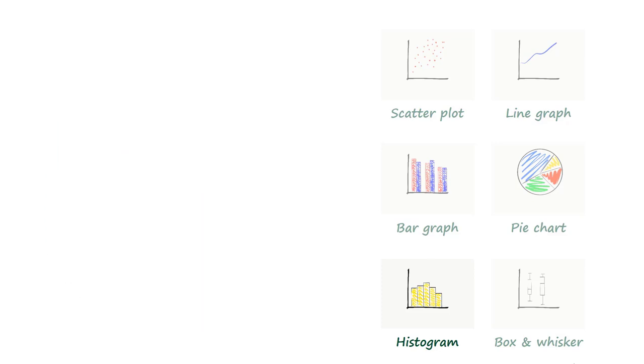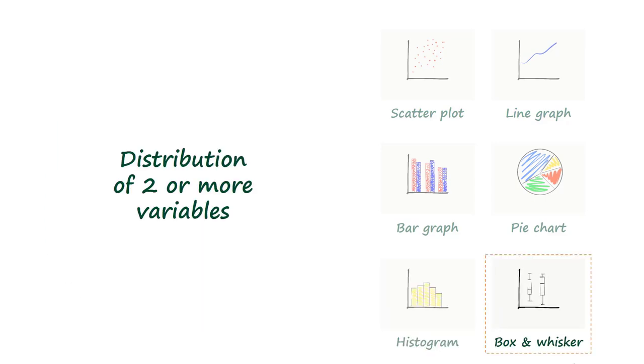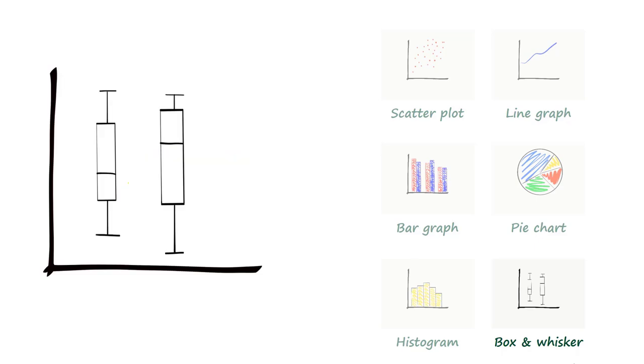Box and whisker plots can be used to show the distribution of two or more variables. A box and whisker plot is used to show the shape of the distribution, its central value and its variability.